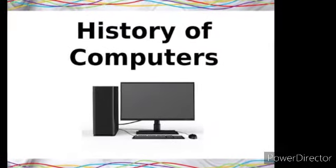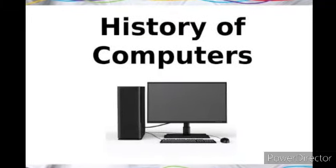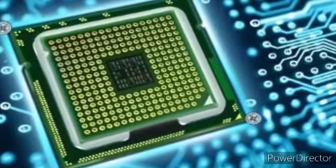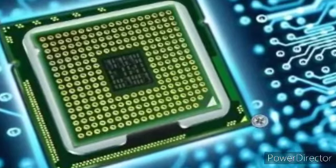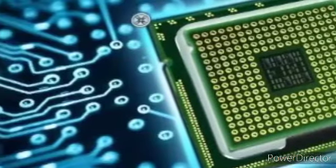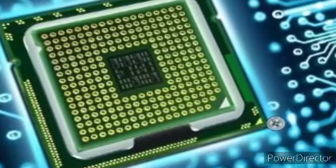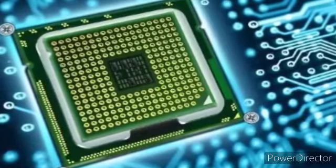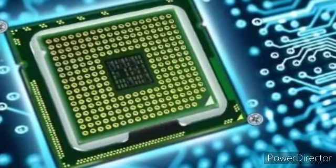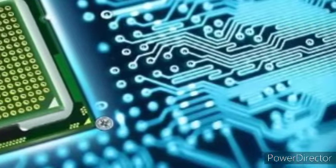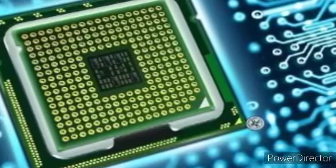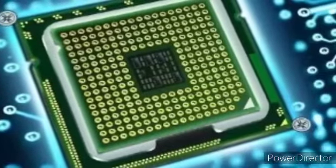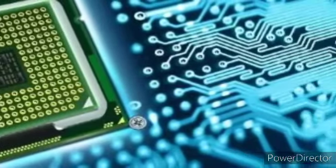That was the history of the computer. Next is the development of the computer. The development of the computer took place in various stages called generations. Let us learn about them one by one. The first generation of computers was between 1940 and 1956.